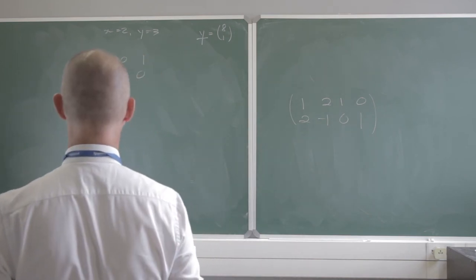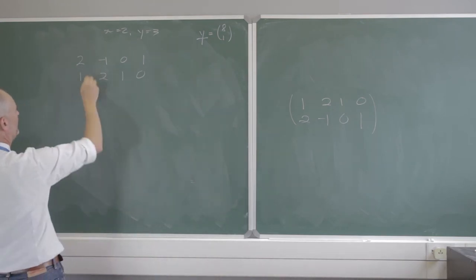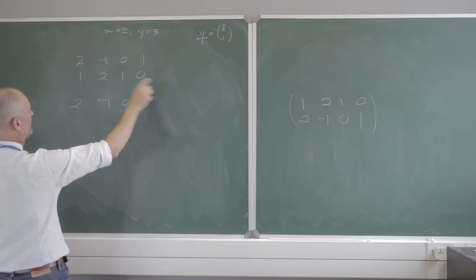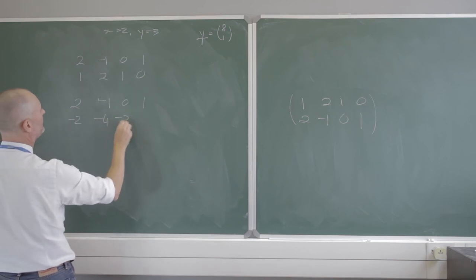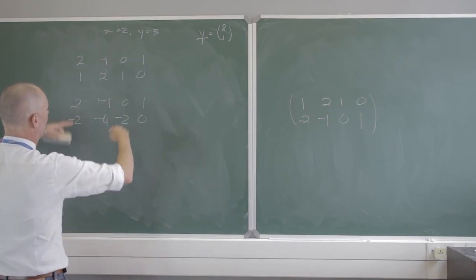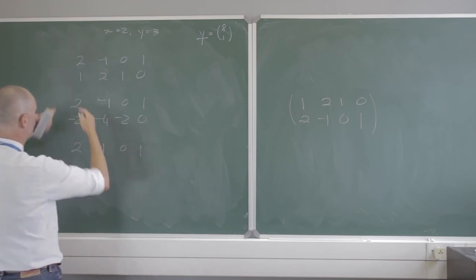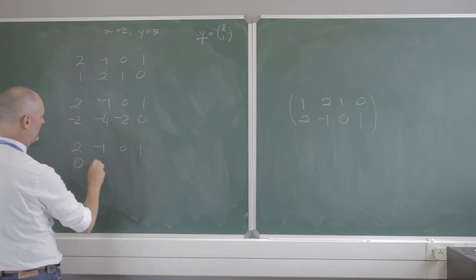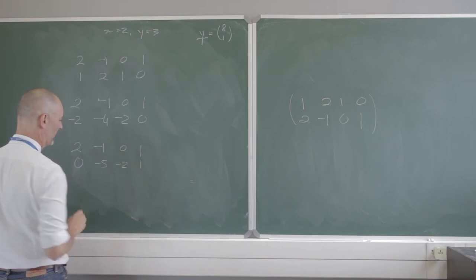So I have 2, negative 1, 0, 1 and 1, 2, 1, 0. I want a leading zero in the second row, so I multiply the second row by negative 2: that gives negative 2, negative 4, negative 2, 0. Adding these two rows together: 2 plus negative 2 is 0, giving me my leading zero, negative 5, negative 2, and 1.